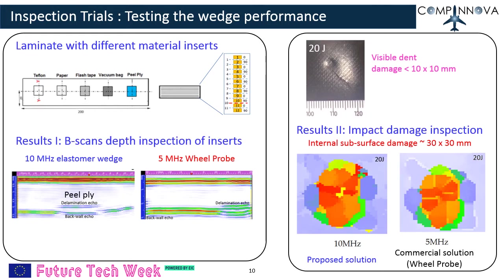Several composite coupons with barely visible impact damages were inspected with the PA module, and one example is shown in the second picture. Impact damage results in the form of time-of-flight C-scans are shown in result 2. Both the 10 MHz elastomer wedge and the commercial 5 MHz wheel probe approximately show the same subsurface damage area, indicating the performance of the PA module.